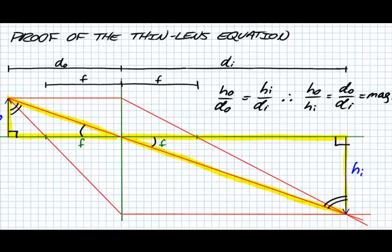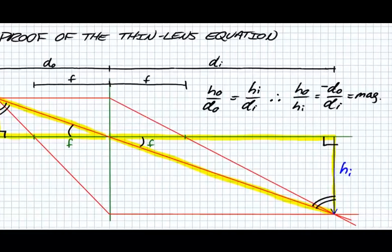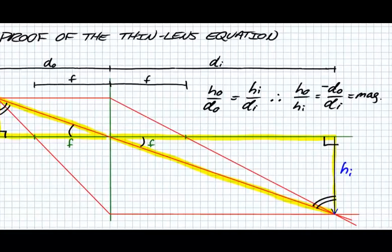The standard minus sign that you typically see in front of the dO for magnification is just because of the sign convention. Usually we call an image that is upside down negative in height, but we call dI positive when it's to the right of the lens. So we have H0 over hI is equal to dO over dI, how many times larger the image is compared to the object. So that's our magnification equation.